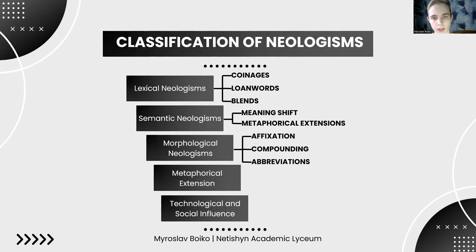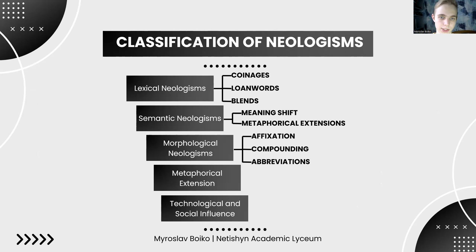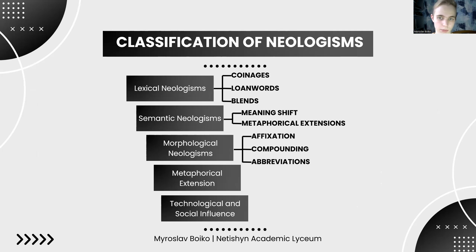What are the classifications of neologisms in English? Neologisms in English can be classified based on their origin, formation process and function. The main types include lexical neologisms — newly created words or phrases that introduce a new concept. Coinages are completely new words, like Google or Kodak. Loanwords are borrowed from other languages, like sushi from Japanese or déjà vu from French. Blends are combinations of two words — for example, brunch from breakfast plus lunch, or smog from smoke plus fog.